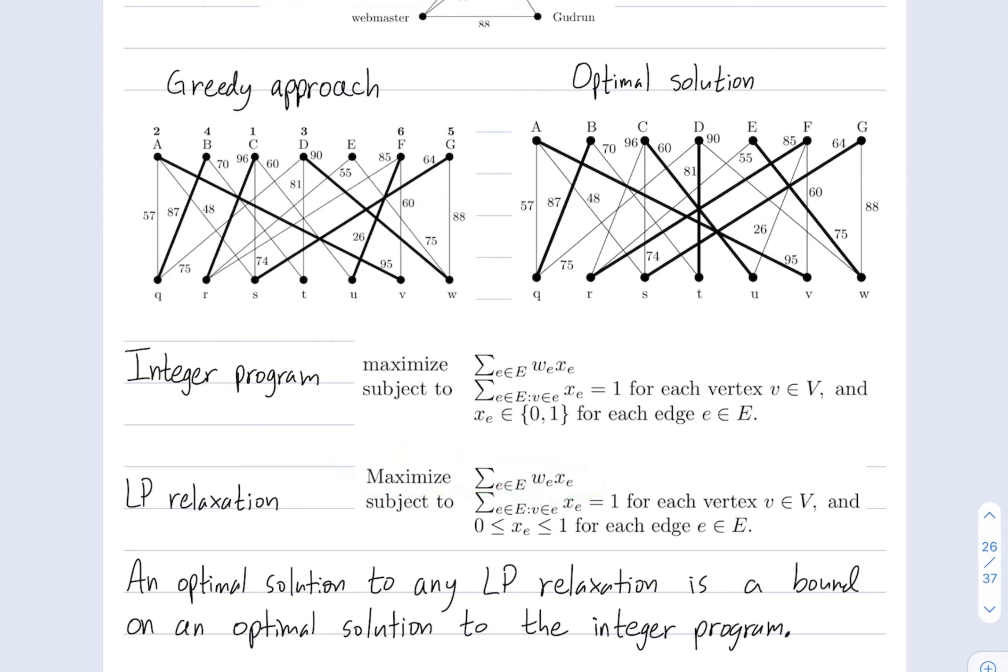And that comment that an LP relaxation bounds an integer program, that's a general comment. That's true for any integer program. You can always form a relaxation, and the optimal value of the relaxation gives you a bound on the original program.